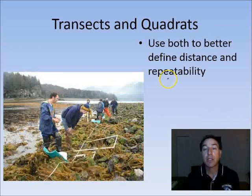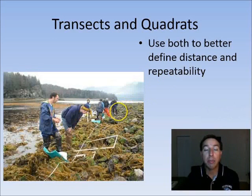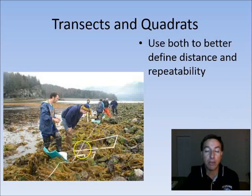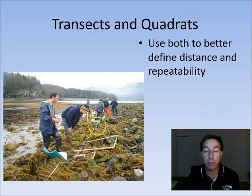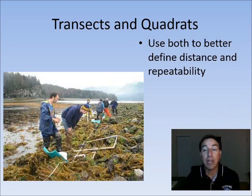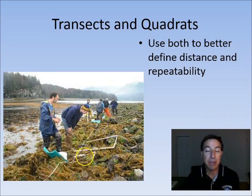Now you could also use transects and quadrats in conjunction. In this case, we're sampling a rocky tidal pool estuary area here, and they have a transect that goes across here that they mark. Every once in a while, there's a little mark on the transect, and at that mark, they place a quadrat. Then they look at whatever species they're looking for in this quadrat, or they count all the species in that quadrat. Going down a little bit further, there's another mark, and they place a quadrat there. Once again, this allows for repeatability, and it allows you to better determine your distance, how many times you're going to do this.